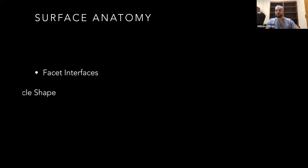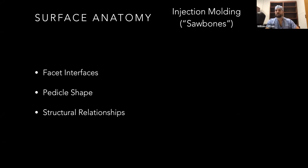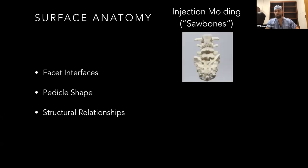That's how you can put in a much larger screw diameter than the actual pedicle diameter. My first goal in creating a surgical simulator was to recreate this concept — to get the same haptic feedback you would get either putting a screw in a cadaver or in a person. There are two basic ways I could reproduce surface anatomy: facet interfaces, pedicle savings, structural relationships. The first is injection molding technique, known as a sawbones model. The issue is you're basically limited to one type of morphology, with no room for pathologic appearance or differences in scoliosis. Then there's 3D printing.